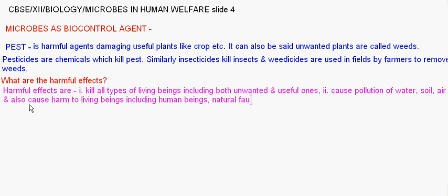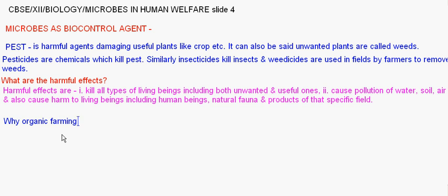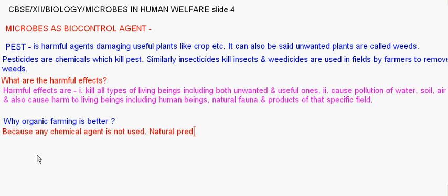Why is it better to use biocontrol agents? Why is organic farming or biological farming far better? Because in the case of organic farming, no chemical agent is used. Instead, natural predation is used to control and minimize the effects of pests, including insects and others.